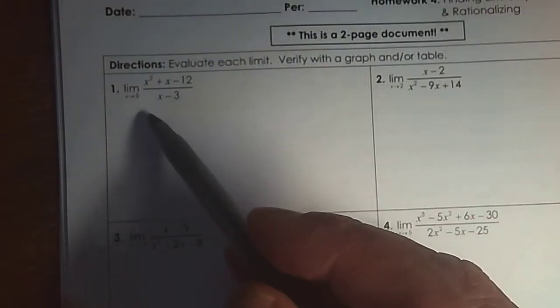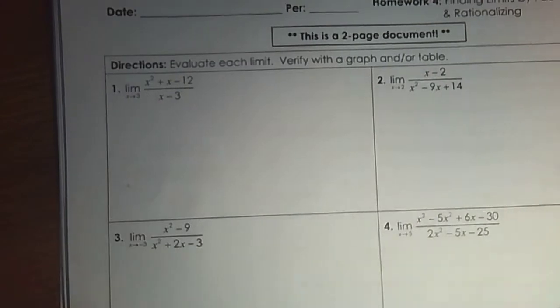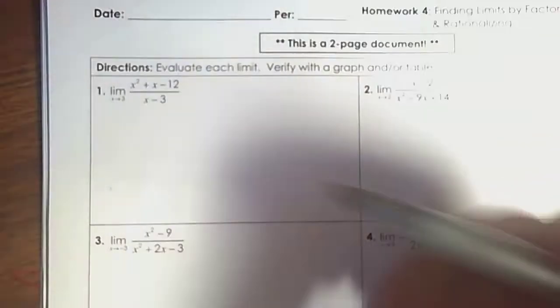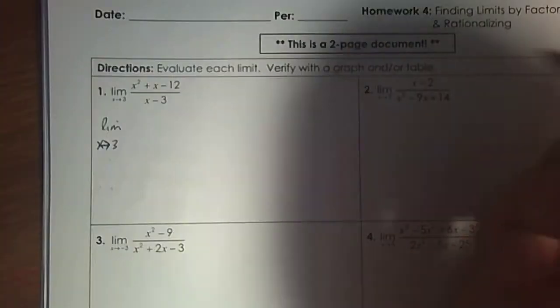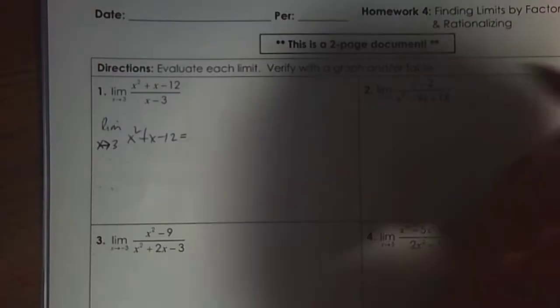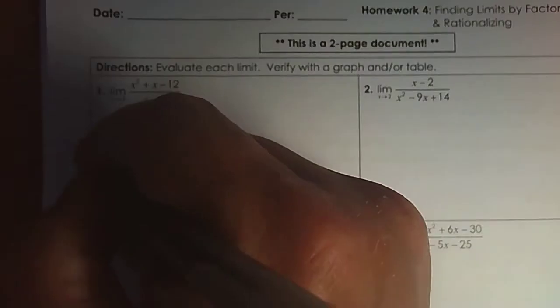So what's the limit as x approaches 3 of x squared minus 12 plus x, subtract 12 and x subtract 2? First thing, you substitute in. I'm not going to do this for every question, but I'll do it here. So as x approaches 3, just the numerator — if I plug in 3, it's 0.